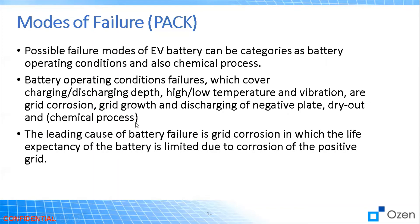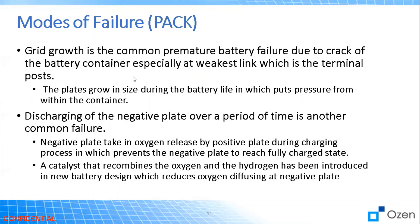One of the main leading causes of battery pack failure is grid corrosion, in which the life expectancy of the battery is limited due to corrosion of the positive grid. Grid growth is a common premature battery failure due to cracking of the battery container, especially at the weakest link — the terminal post. Over time, discharging of the negative plate is also a common failure. The negative plate takes in oxygen released by the positive plate during charging, preventing the negative plate from reaching a fully charged state. A catalyst that recombines oxygen and hydrogen has been introduced in new battery designs to reduce oxygen diffusing into the negative plate.